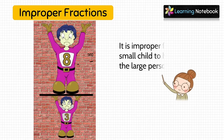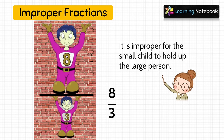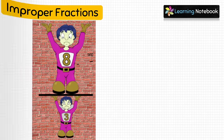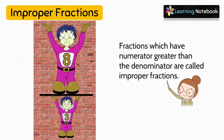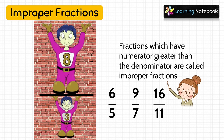Now let's understand improper fractions. Here it is improper for the small child to hold up the large person. So 8 by 3 is an improper fraction because it is improper for the small number 3 to hold up the large number 8. Fractions which have numerator greater than the denominator are called improper fractions. For example, 6 by 5, 9 by 7, and 16 by 11 are all improper fractions because their numerator is greater than their denominator.